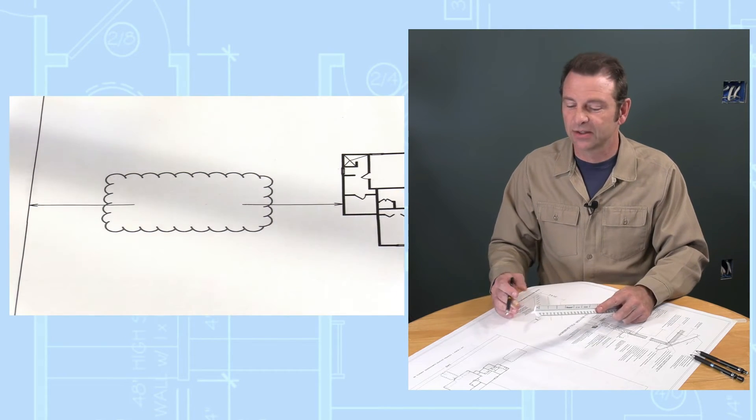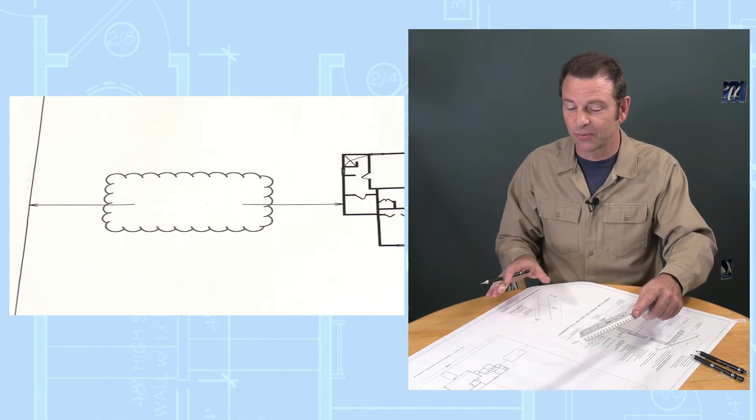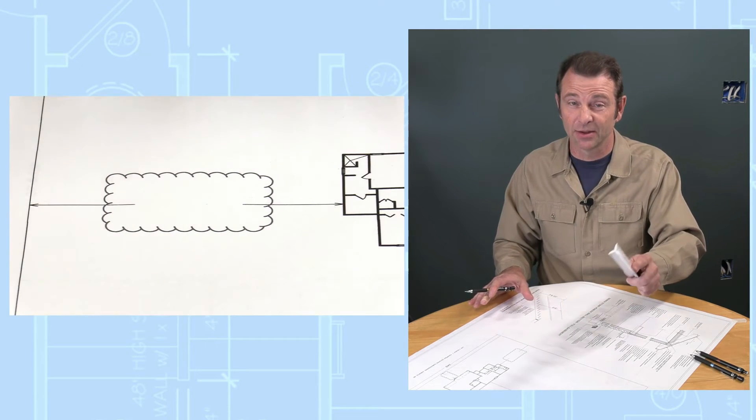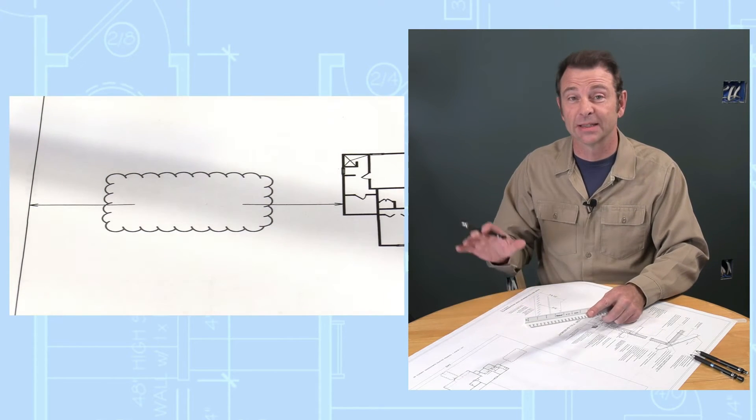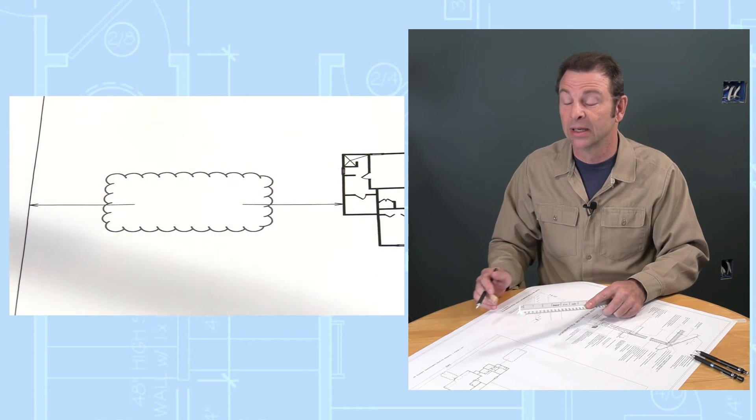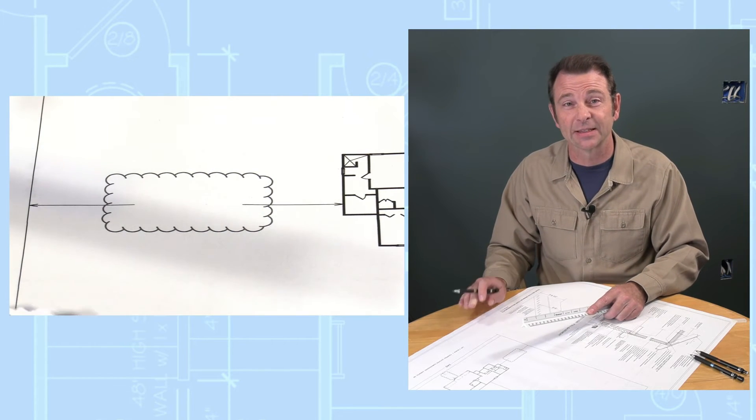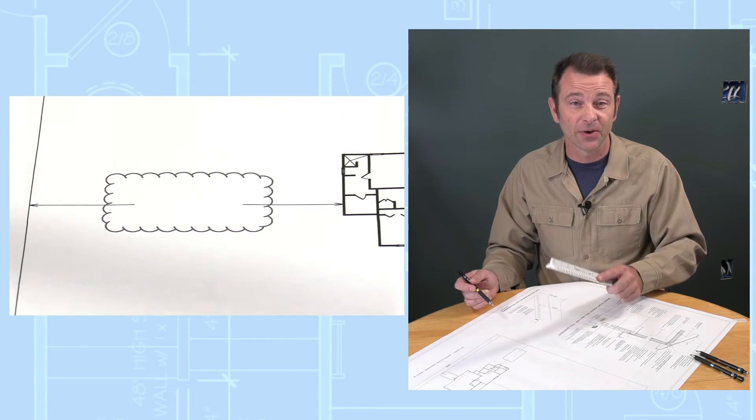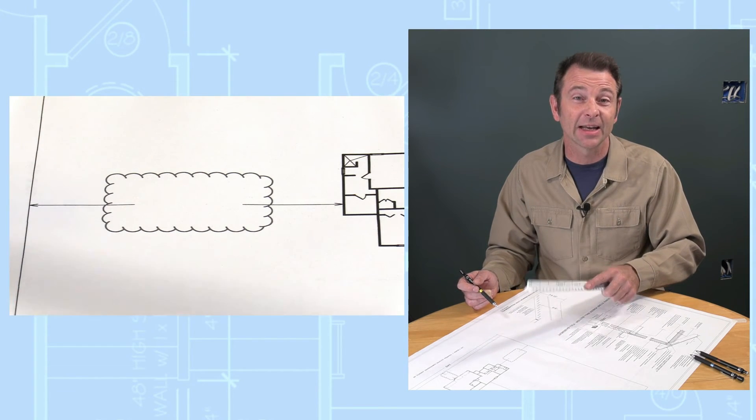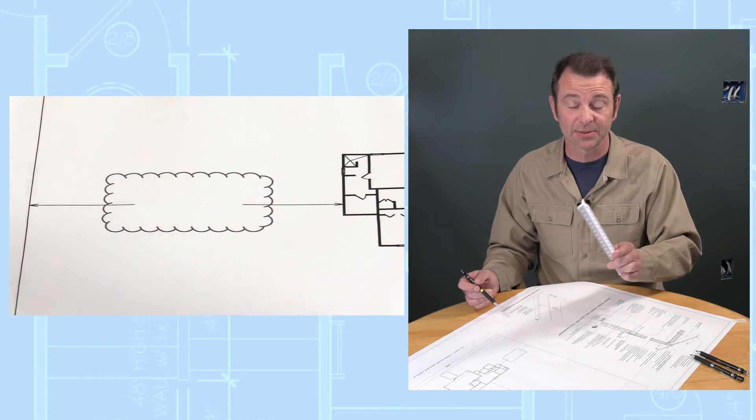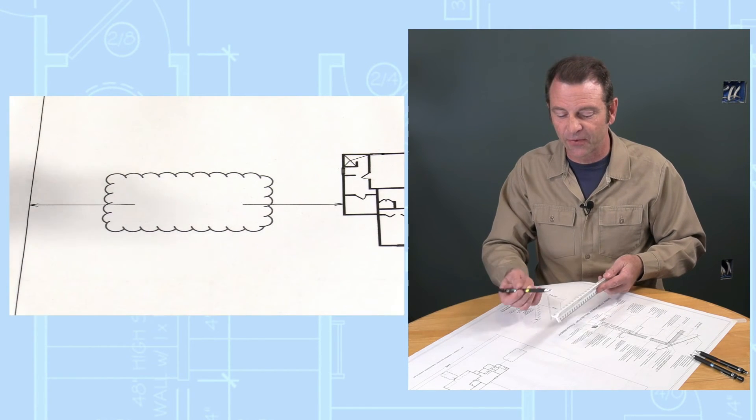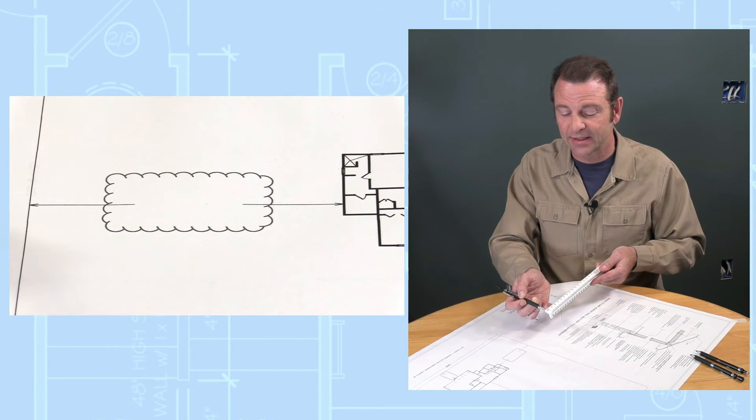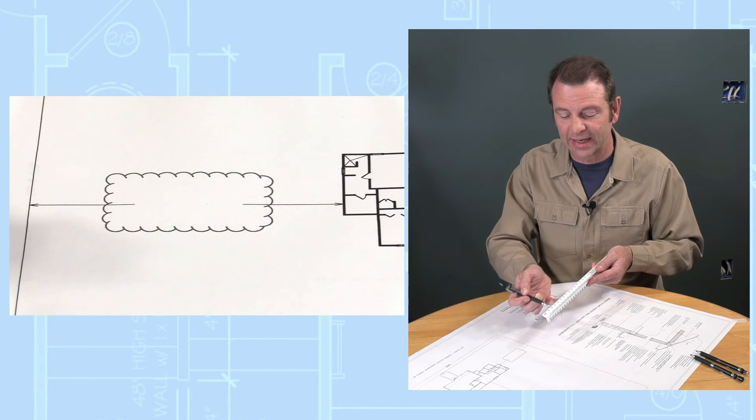Let's put this engineer scale to use on this set of plans. I've rotated this set of plans, it might look strange to you on this camera, but it's lined up for our closeup camera. Also, this set of plans is spelled out at one inch equals 20 feet. So our first step is identifying that scale and locating it on this particular tool. I'm looking for my one to 20 edge. This is the ruler that I need to use.